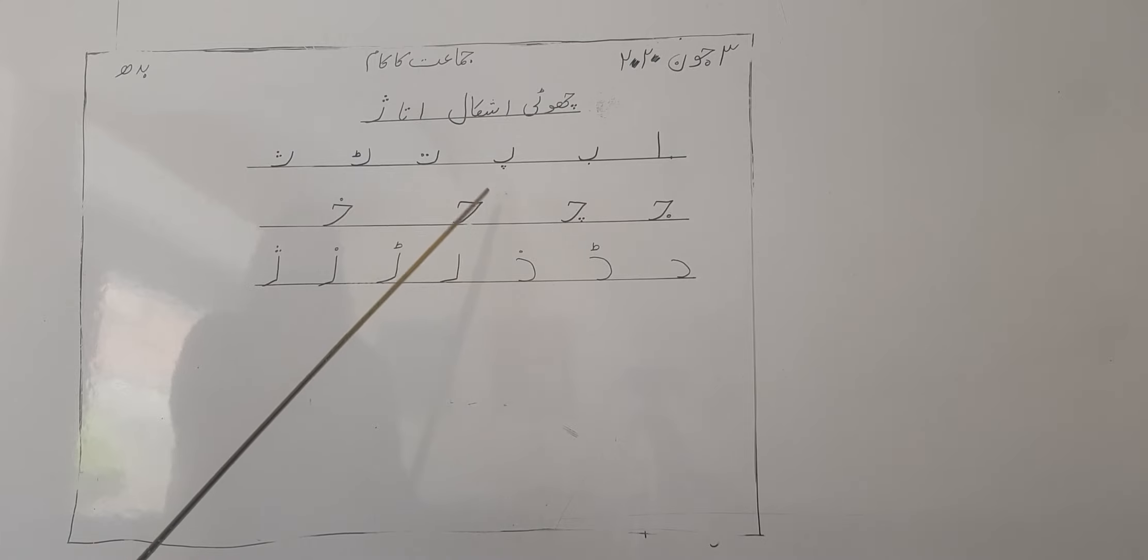Awaazein bhi inko kehte hain, kya kehte hain, awaazein: j, ch, h, kh, b, p, t, t. In hone apna, is family ne, apni position aur apni shekal nahi badli. Ye isi tarah likhe jaenge. Daal, daal, zaal.